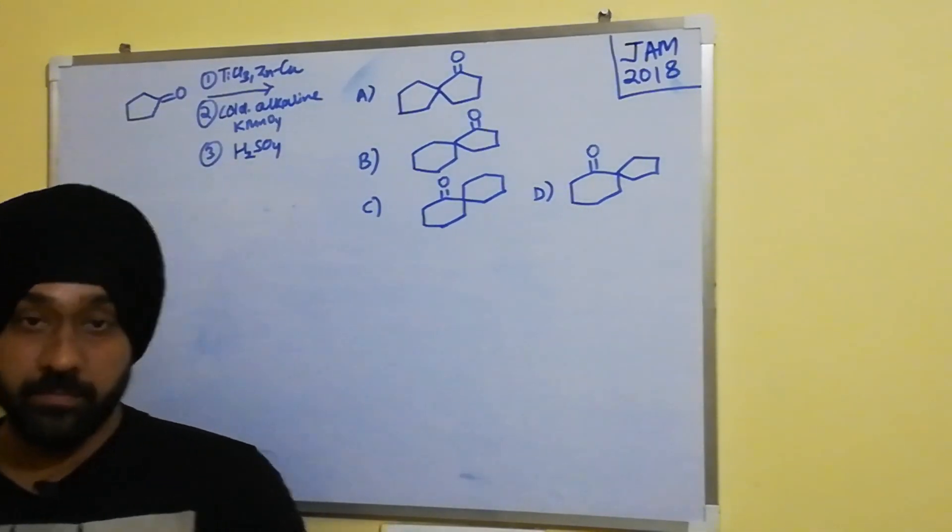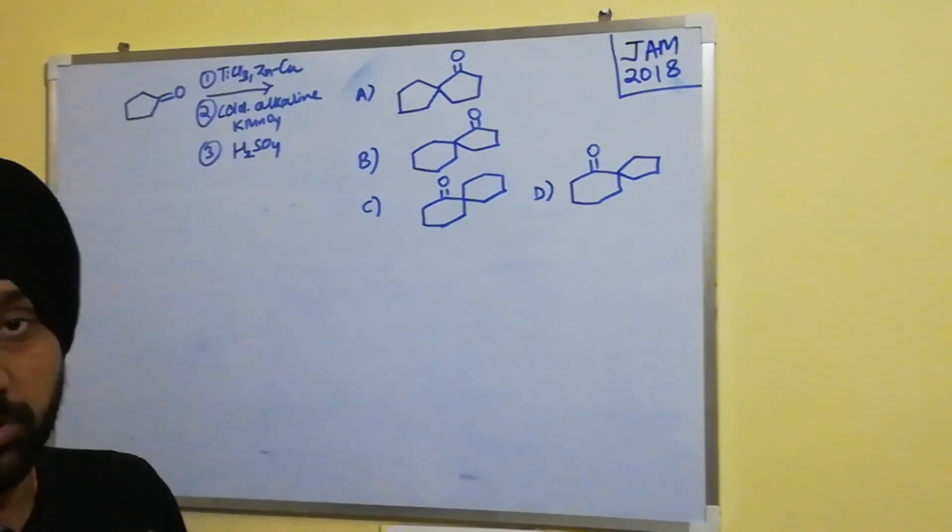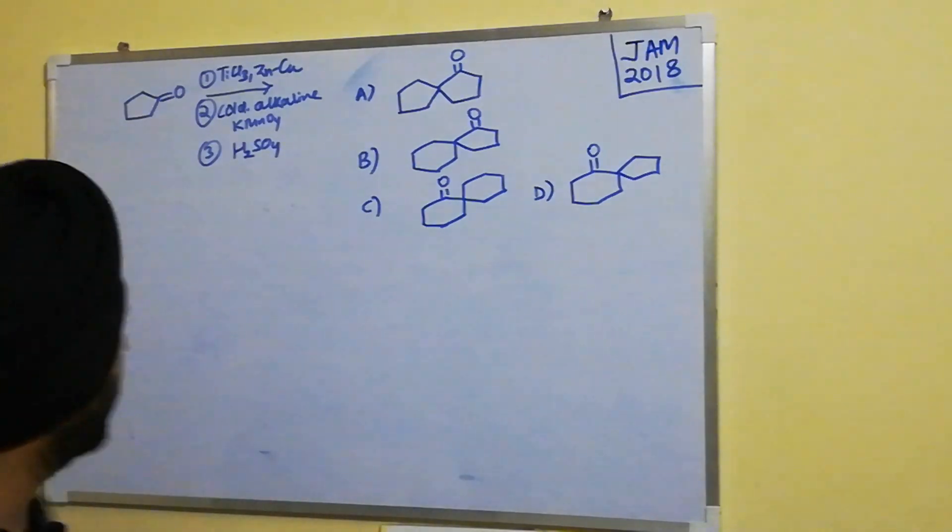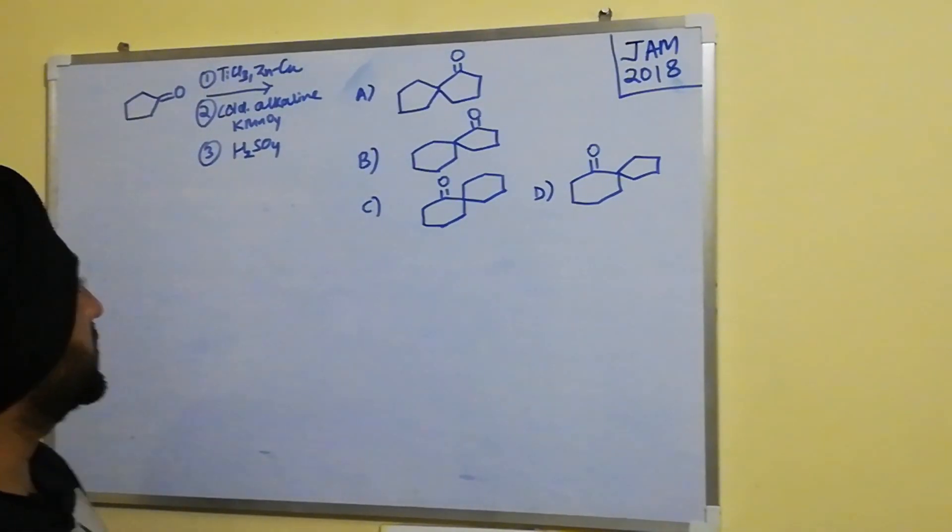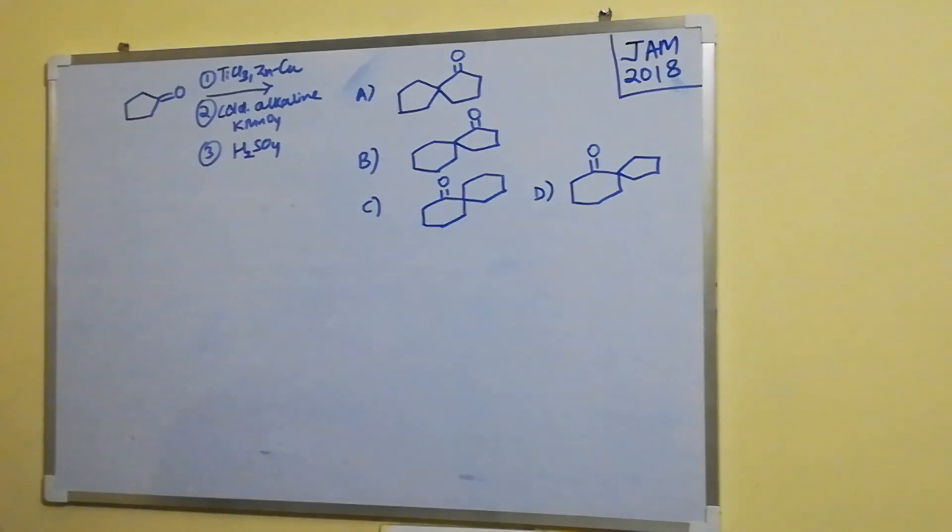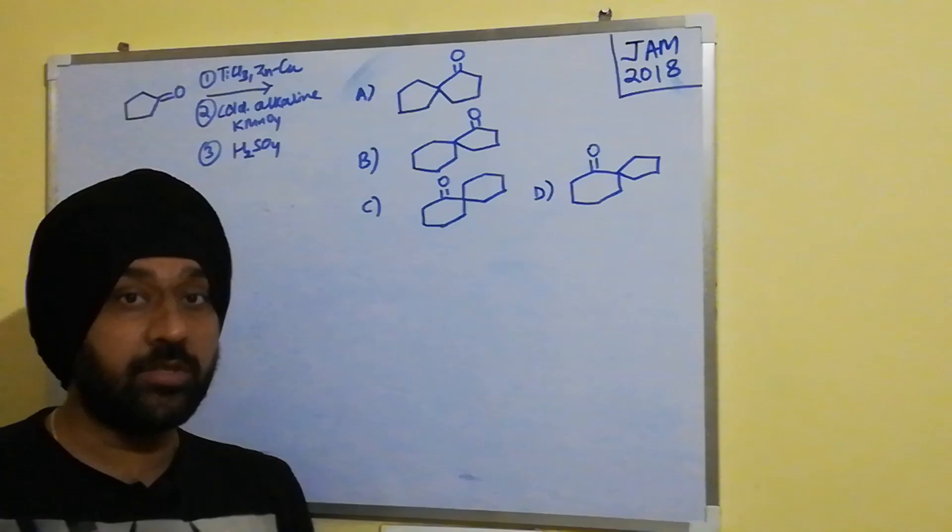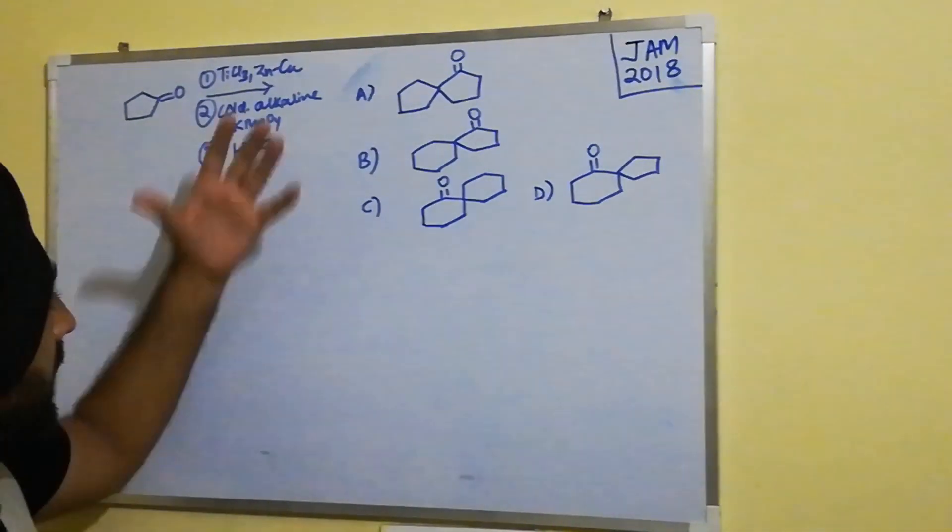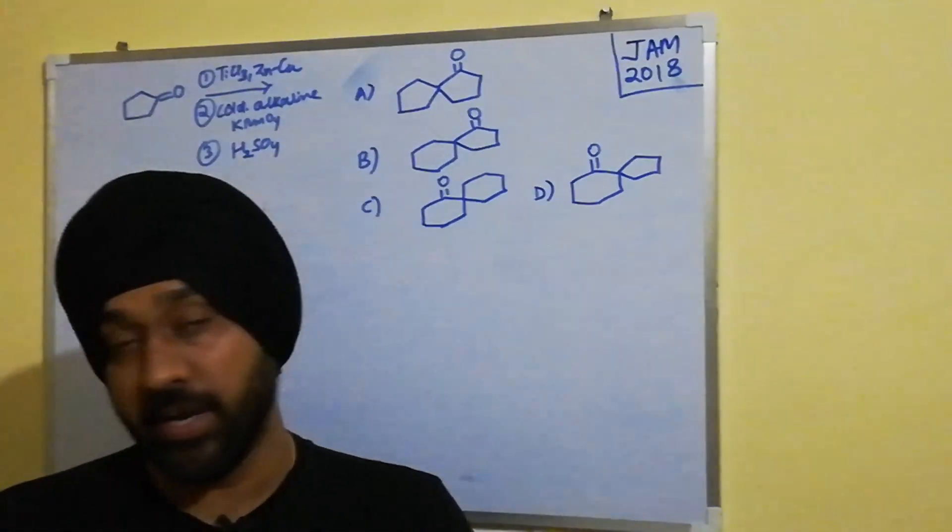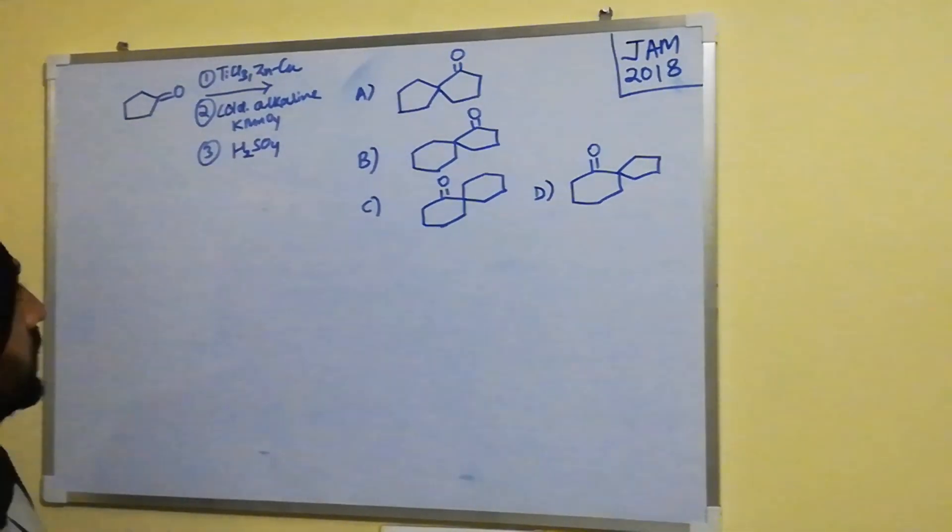Let's take up another problem which appeared in JAM 2018. Here we have cyclopentanone which in the first step is treated with titanium chloride and zinc copper alloy, and in the next step with cold alkaline KMnO4 followed by treatment with H2SO4. These are the four options that we are given.